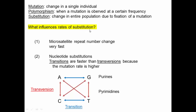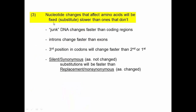So what influences rates of substitution? First of all, the mutation rate is a big part of this. Microsatellite repeat number change would be very fast because the mutation rate is very high. Nucleotide substitutions — transitions would have faster rates of substitution than transversions because their mutation rate is higher. Nucleotide changes that affect amino acids we would expect to substitute slower than ones that don't, because they'll more often be deleterious and selected against. So even though the mutations will occur just as often, the substitutions would be less frequent. Junk DNA or intergenic sequences change faster than coding regions because mutations there are more likely to be neutral and can fix by drift, as opposed to being deleterious and prevented from fixing due to selection.